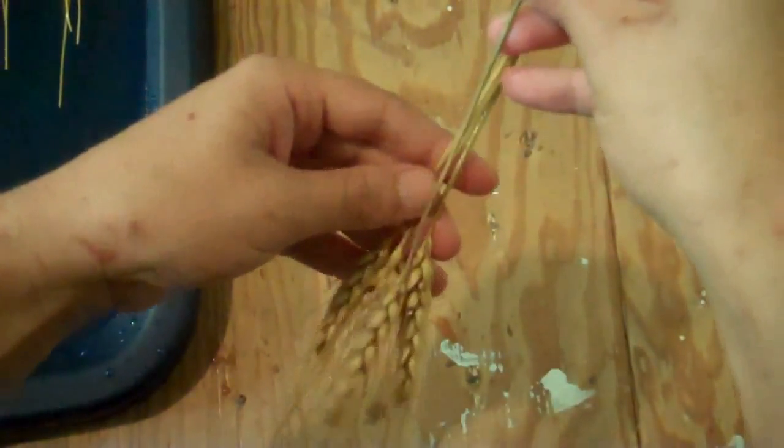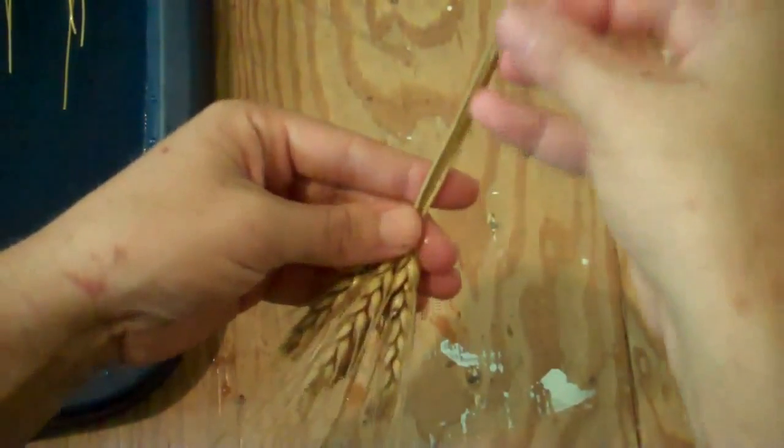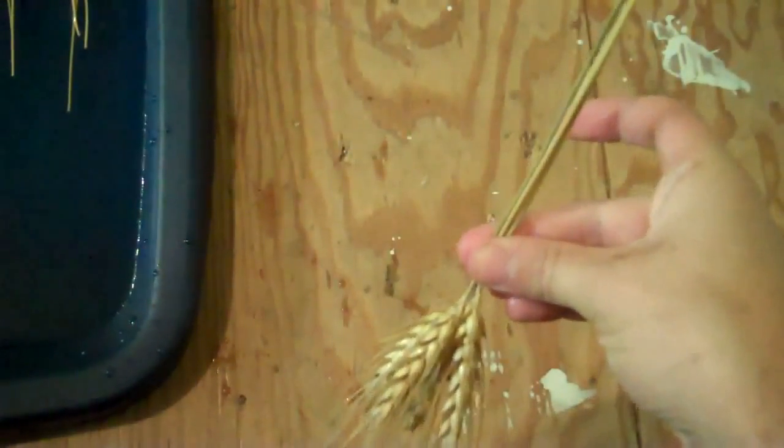Then put the other 6 straws with heads around the wired core, 3 on each side, and tie them off with a piece of double thick white thread.